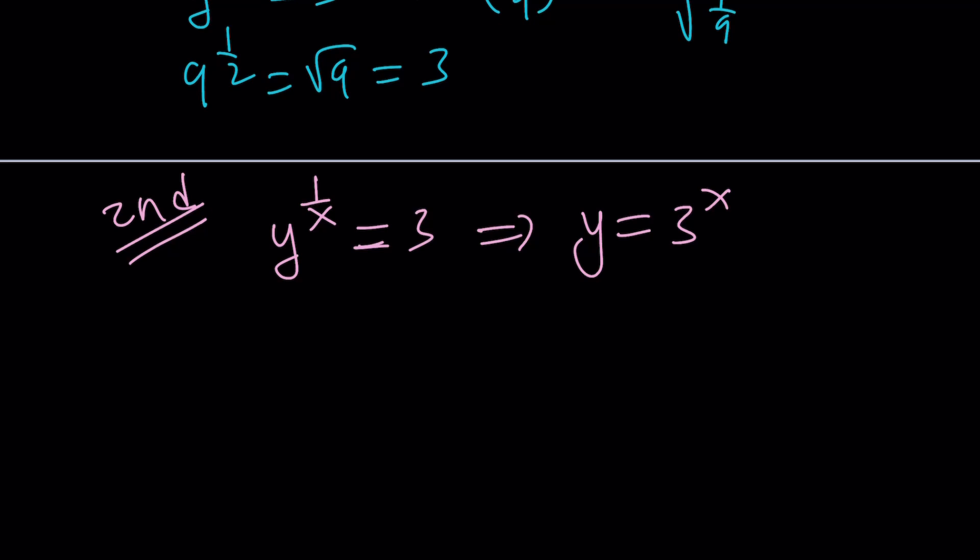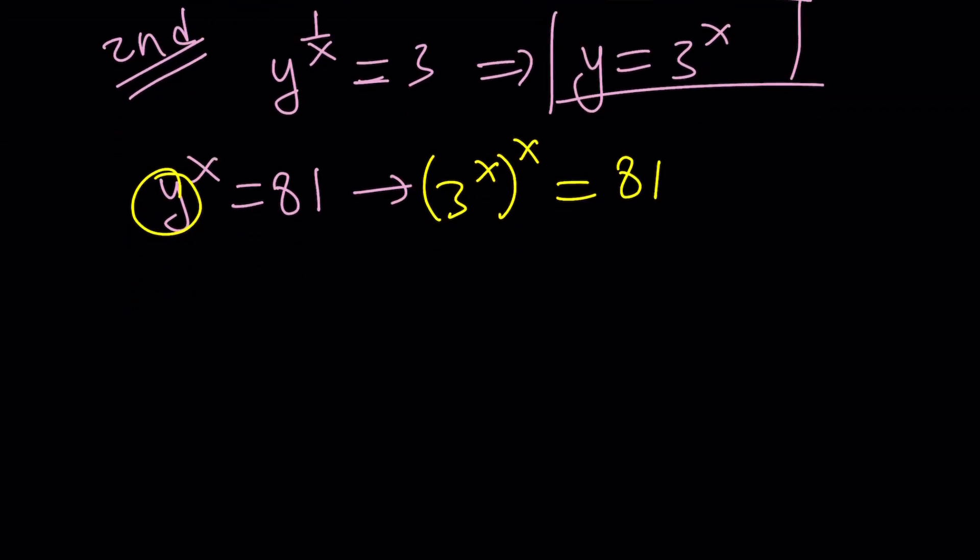Here's what we're going to do. The second equation tells us that y to the power of x is equal to 81. But I know that y can be written as 3 to the power of x. So from here, I can replace y with 3 to the power of x, and then that to the power of x equals 81. That means 3 to the power of x squared. Again, the exponents are multiplied. And this should equal 3 to the fourth power. This gives us x squared equals 4 again, and x equals 2 and x equals negative 2.